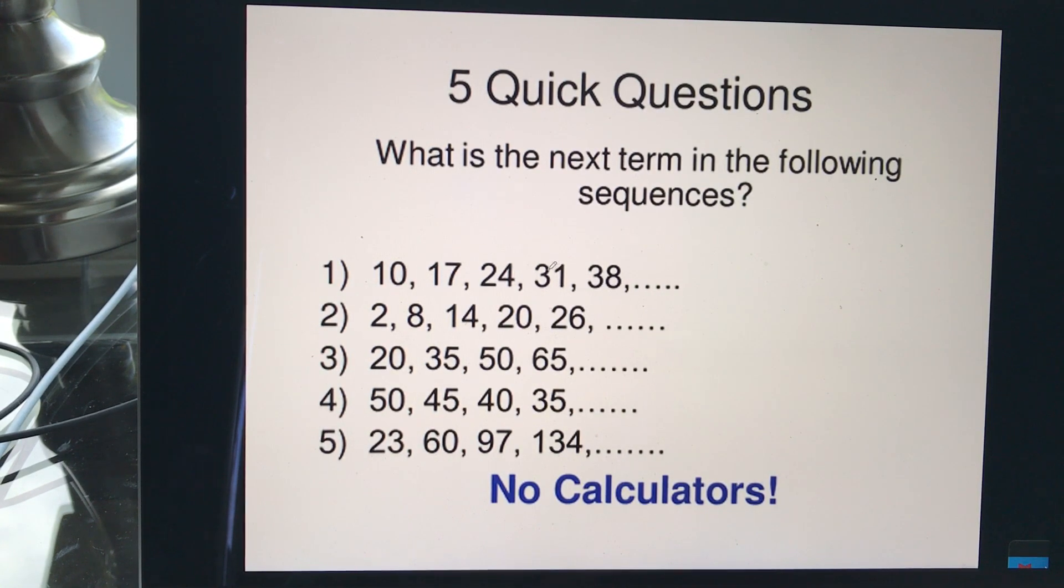So just a couple here we can just kind of do quickly here together. What are the next few terms in the sequence? So the first term here would be 10. I say, what am I doing 10 to get to 17? Obviously, I'm adding 7. What am I doing to 17 to get the 24? I'm adding 7. So obviously at 38, to get over to my next term, I would add 7. That would be 45. And then you can keep going.